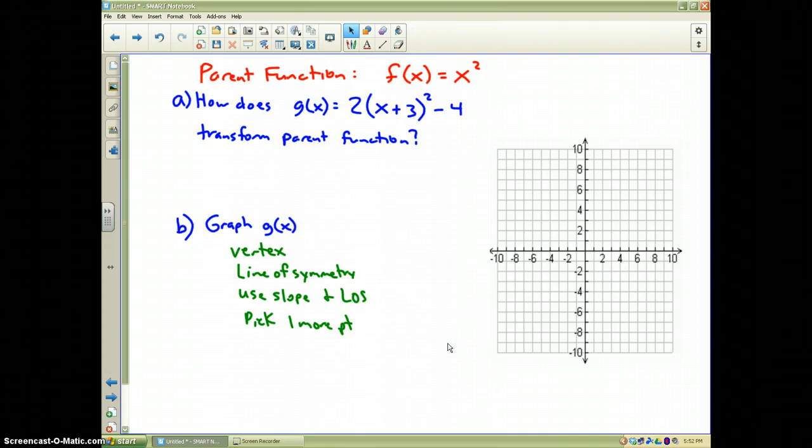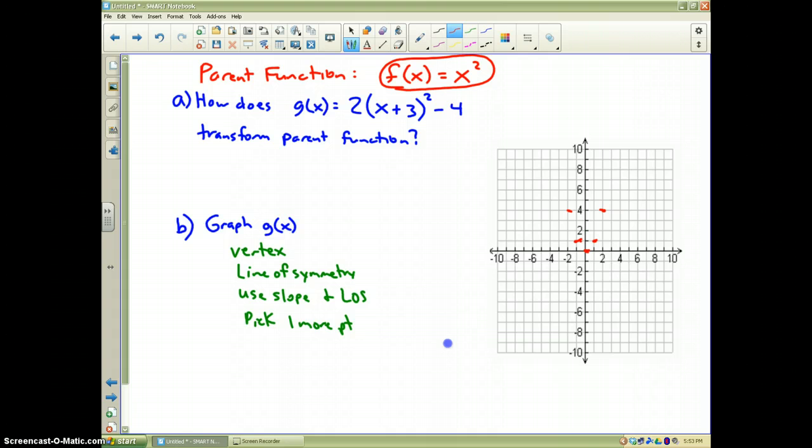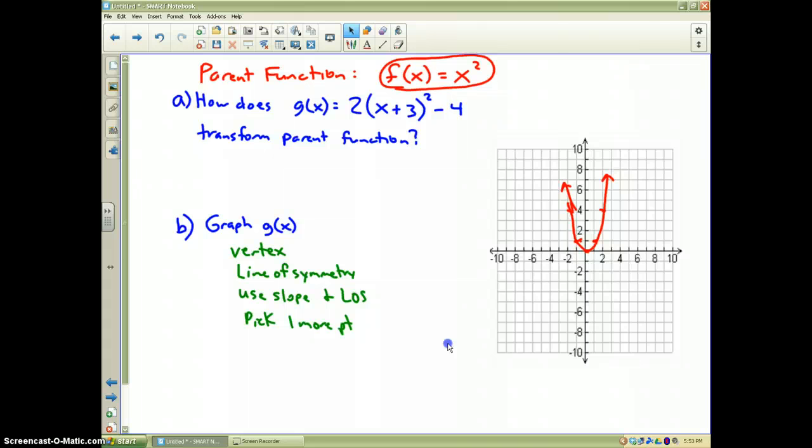All right, here's the first one. Remember, our parent function from the last video is f of x equals x squared. That's our parent function. And if we were to graph it, I'm just going to sketch the graph, and hopefully we've kind of got this memorized a little bit from the last video. And I'll do the best I can again with the smart board. It looks something like that. All right, so letter A. How does g of x equal to 2 parenthesis x plus 3 squared minus 4 transform the parent function? Well, if you notice, it is in vertex form.